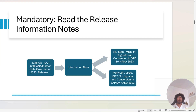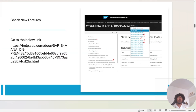The next thing is to read the release information note, which is very important. SAP puts all the information you need to execute mandatory steps before and after the upgrade. Please go through these release information notes. There is a common release information note, one for MDG-M, and one for MDG-PP.